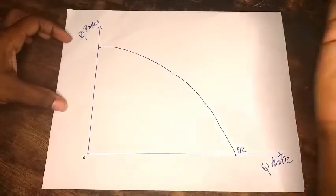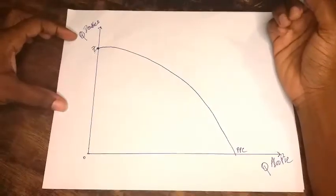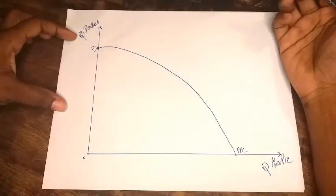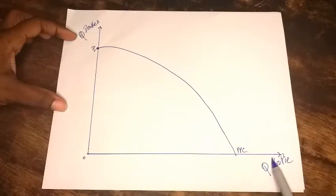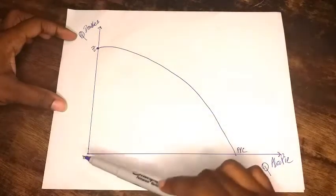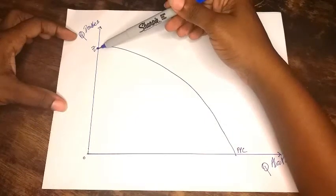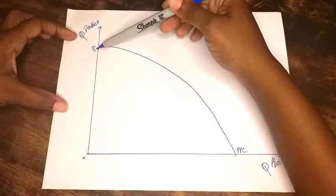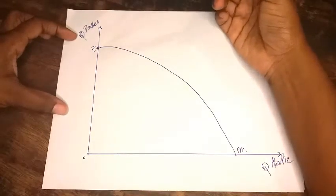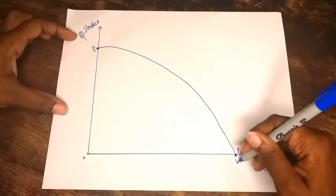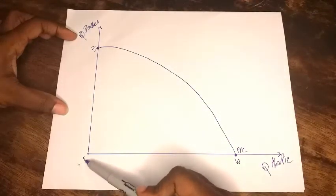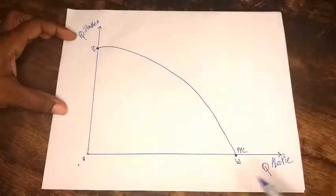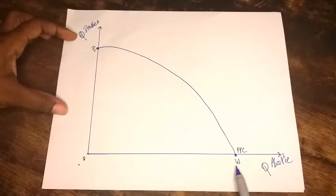We're going to look at the points on this PPC curve and how it relates to our doubles vendor. If we're at a point such as here, let's call this point Z. It means that zero units of aloo pie is being produced and all the resources are being put into doubles. So we have Z units of doubles being produced. Likewise, if we're at a point such as here, you can call it W, it means then that zero units of doubles are being produced while a maximum of W units of aloo pie is being produced.